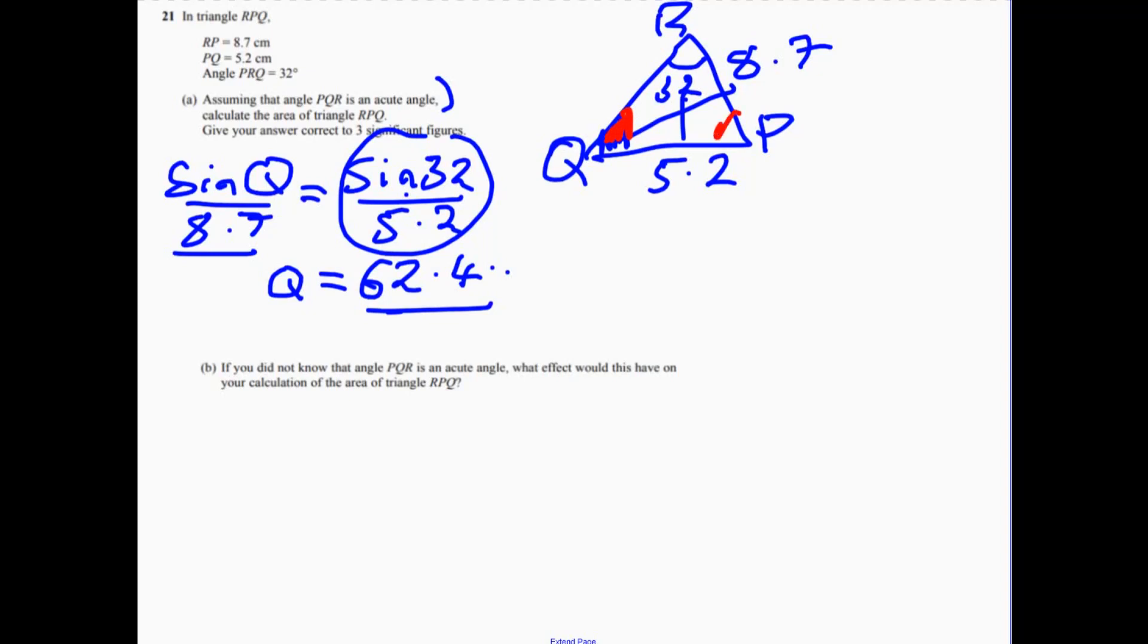But I really want to know this one so I can do the area. Because remember, the area is going to be a half multiplied by 5.2 multiplied by 8.7 multiplied by the sine of this angle here. Because you've got the two sides around the angle. So we need to know this angle in here.